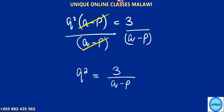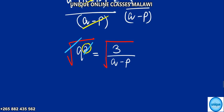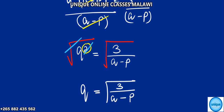Now to make this a proper formula I need this power here. We're going to introduce a square root on both sides — square root here and square root on that side. The square and the square root cancel, remaining with Q is equal to the square root of 3 over a minus P.